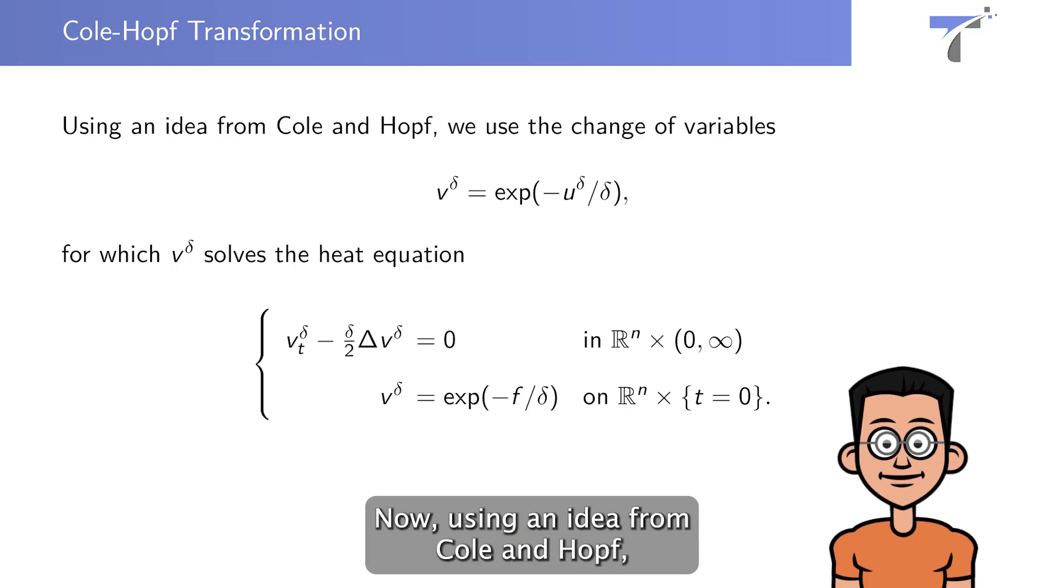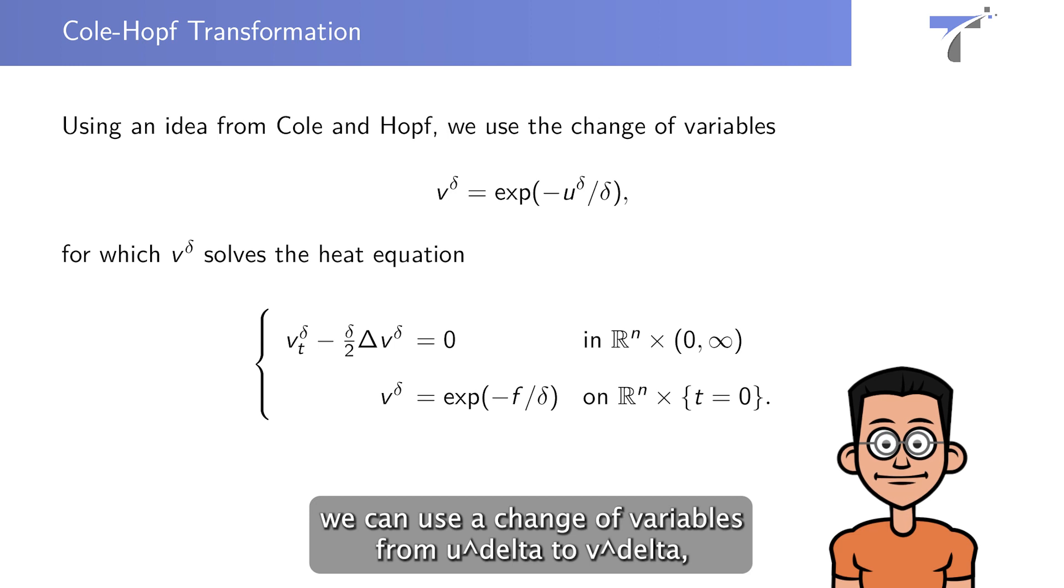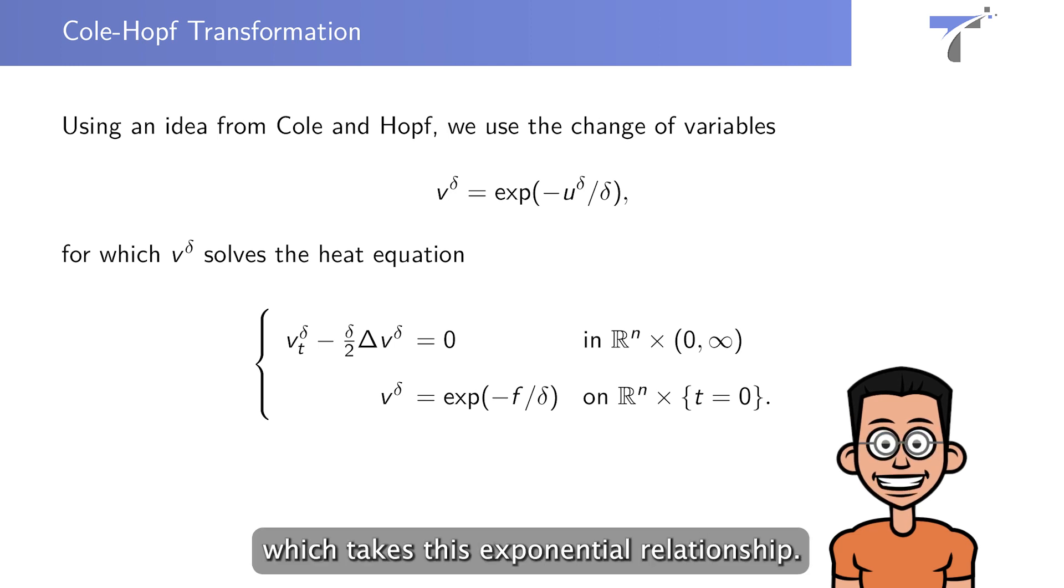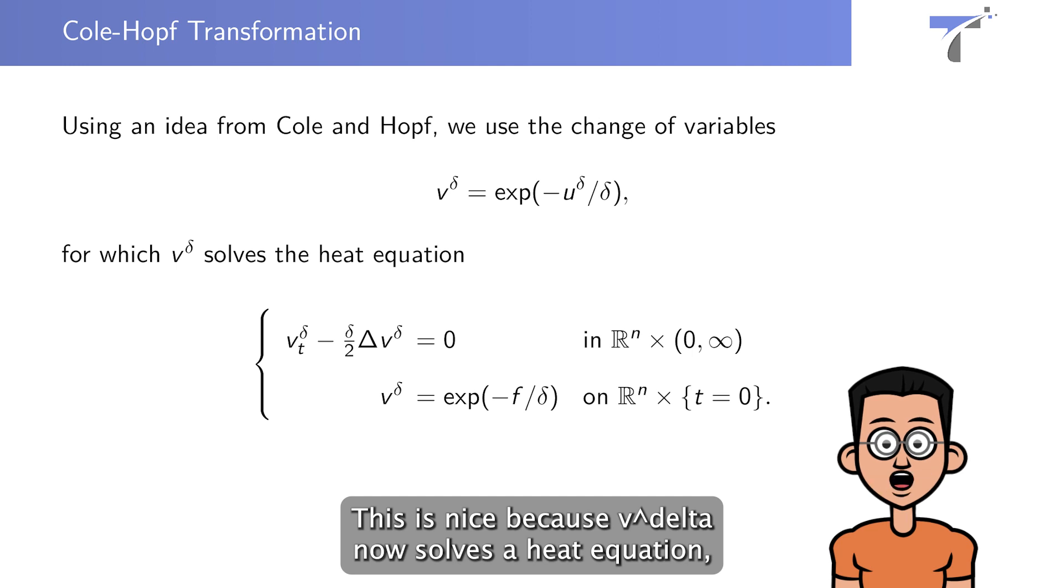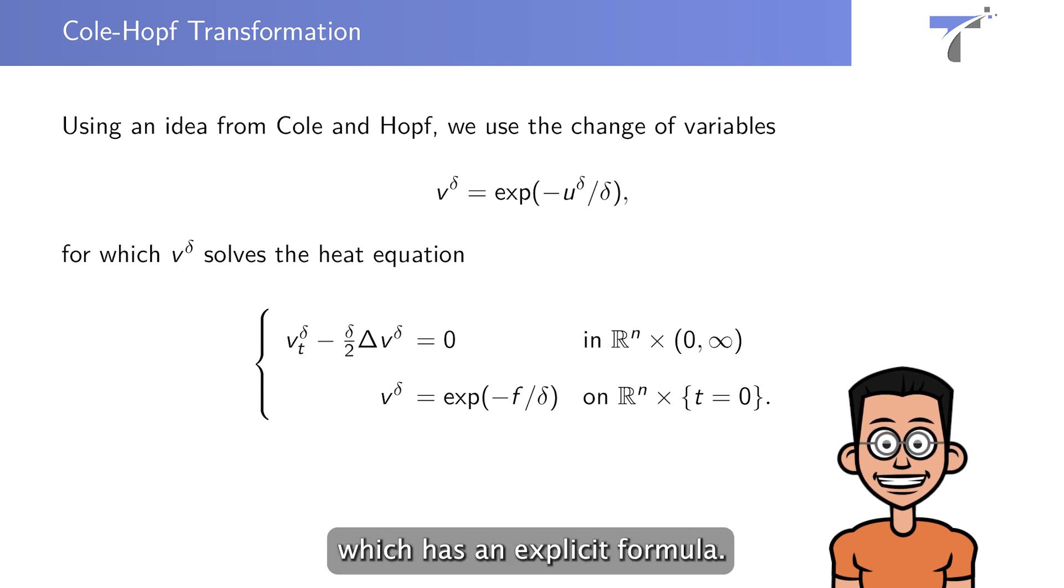Now, using an idea from Cole-Hopf, we can use a change of variables from u-delta to v-delta, which takes this exponential relationship. This is nice because v-delta solves a heat equation, which has an explicit formula.